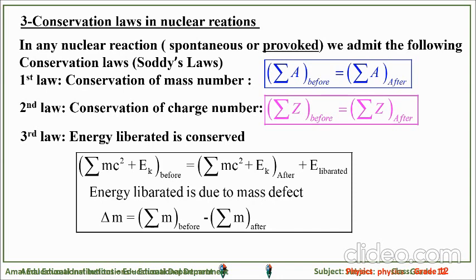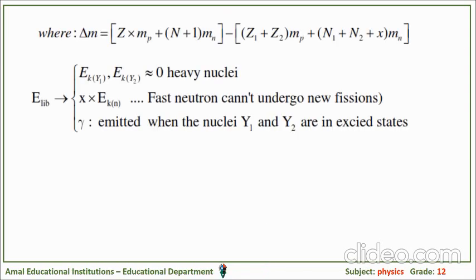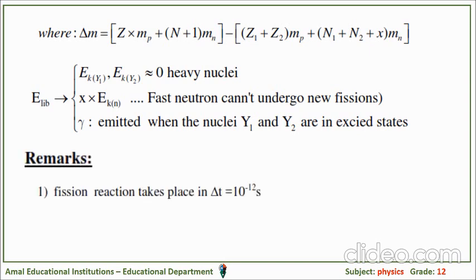The mass defect Δm equals the sum of masses before minus the sum of masses after. For a fission reaction, the energy liberated is transformed into the kinetic energy of Y1 and Y2 (approximately zero since the daughter nuclei are heavy), plus the kinetic energy of the x emitted neutrons (which are fast and cannot produce new fission reactions), as well as the gamma radiation emitted when Y1 and Y2 are in excited states. Fission reaction takes place in about 10⁻¹² seconds.